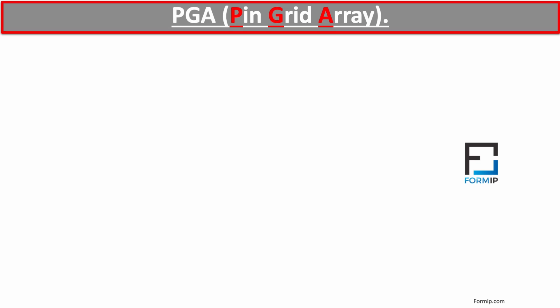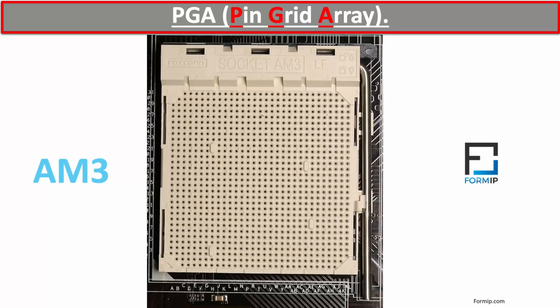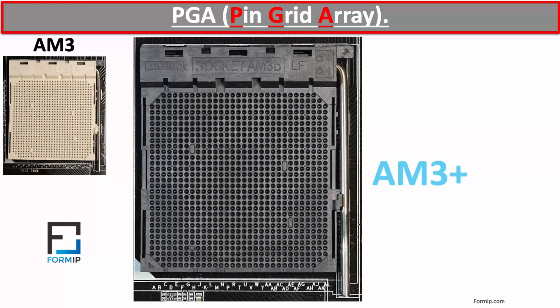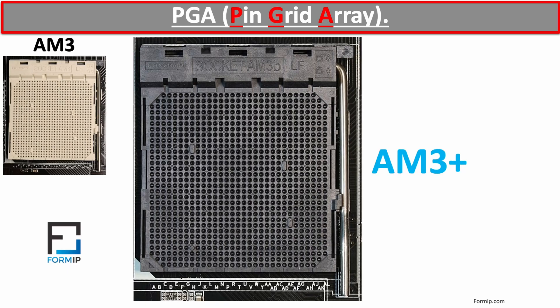Now let's move on to the AMD group, which uses the PGA — pin grid array — package. The first socket is the AM3, released in 2009 as the successor to the AM2+. The AM3 contains exactly 941 pins. Next is the AM3+ socket, the successor to the AM3, with 942 pins, released in 2011. The advantage is that it retains a certain compatibility with the AM3, meaning processors designed for the AM3 will work in AM3+ sockets.